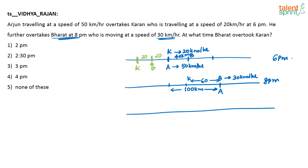So we look at 2 p.m. At 4 p.m., Bharat is here and Karan is here with 20 km between them. In the next 2 hours, Karan will travel 40 km and reach this point. Bharat, in those next 2 hours, will travel another 60 km at 30 km per hour and also reach the same point. So at 2 p.m., they meet — that is the point where Bharat overtakes Karan.